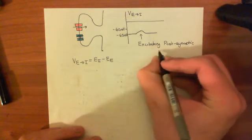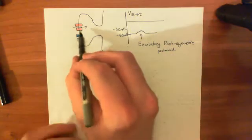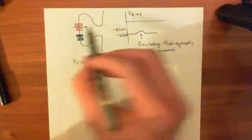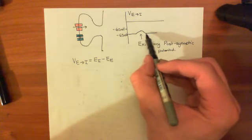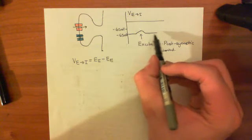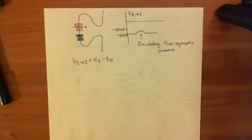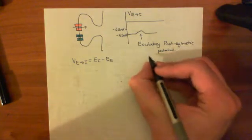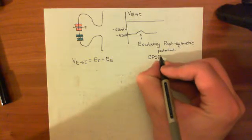As soon as you turn off these currents coming into the cell, the normal resting membrane apparatus of the cell will just restore your electrical potential back to negative 65 millivolts. So, excitatory post-synaptic potential — often abbreviated as EPSP.